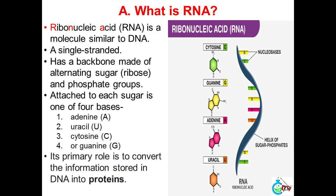2. RNA. A. What is RNA? Ribonucleic acid (RNA) is a molecule similar to DNA. It is single-stranded and has a backbone made of alternating sugar (ribose) and phosphate groups. Attached to each sugar is one of four bases: adenine (A), uracil (U), cytosine (C), or guanine (G). Its primary role is to convert the information stored in DNA into proteins.